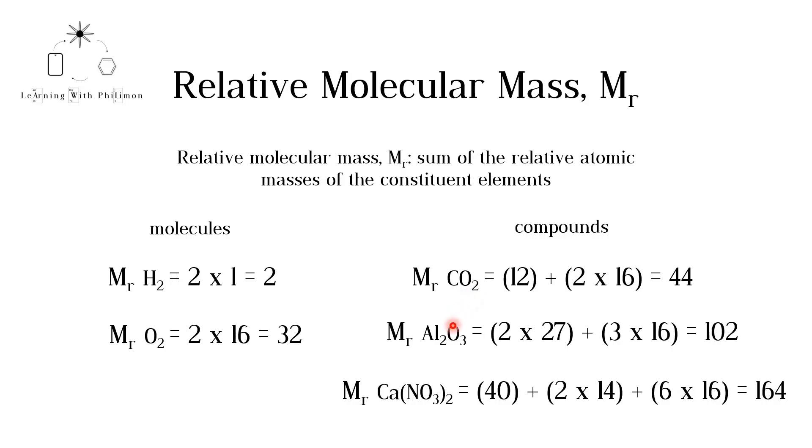In aluminium oxide, Al2O3, we have 2 aluminium atoms and 3 oxygen atoms. The Mr is equal to 102.